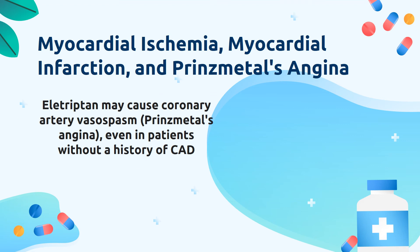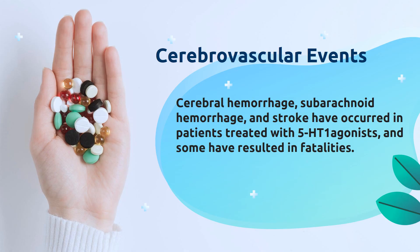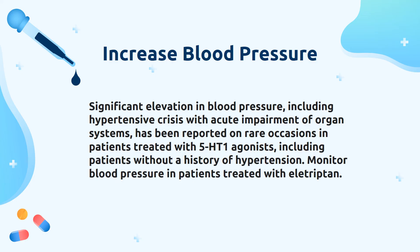Another precaution to keep in mind is that allotriptin may cause coronary artery vessel spasm even in patients without a history of coronary artery disease. Arrhythmia may also occur due to ventricular tachycardia and ventricular fibrillation. There have been cerebral hemorrhage and stroke reported from patients treated with 5-HT1 agonists, and some of these patients resulted in death. Allotriptin may also significantly increase blood pressure, resulting in hypertensive crisis even in patients without a history of hypertension. Therefore, blood pressure should be closely monitored in patients treated with allotriptin.